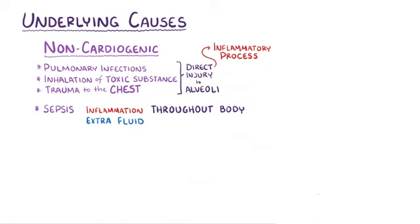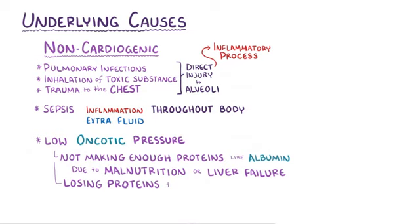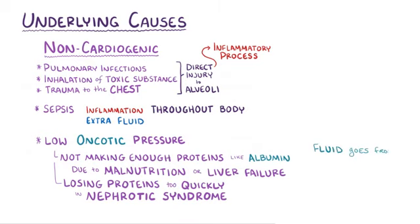Another category of non-cardiogenic causes is having low oncotic pressure. This could result from not making enough proteins, like albumin, due to malnutrition or from liver failure. Alternatively, it could be due to losing protein too quickly, like in nephrotic syndrome. Regardless of the cause, low oncotic pressure leads to fluid moving from the capillary into the interstitial space throughout the body, and in the lungs that results in pulmonary edema.